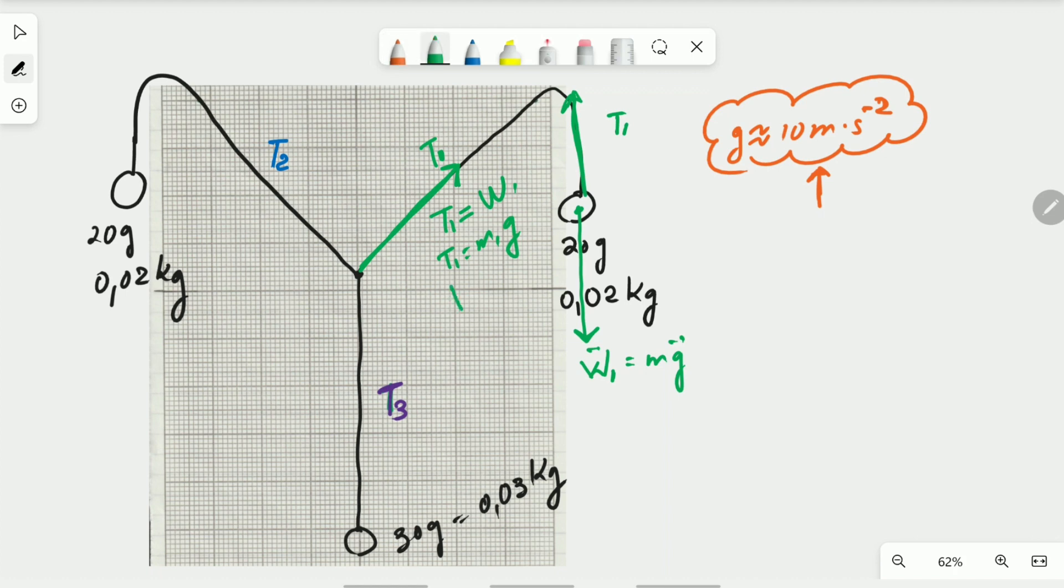So when you substitute here for T1, you will get that is 0.02 multiplied by 10, and that will give you that T1 is equal to 0.2 newton.